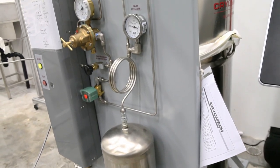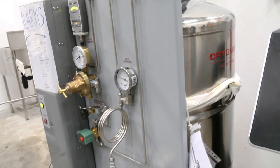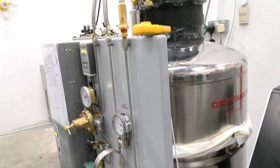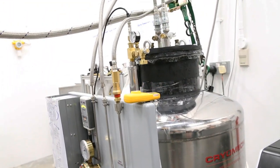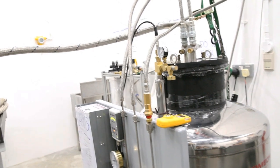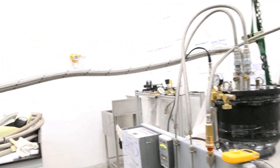Before liquefaction, the gas is cleaned using a liquid nitrogen trap, which simply condenses out any impurities such as air or water vapor. Pure helium gas then flows to the reliquifier.